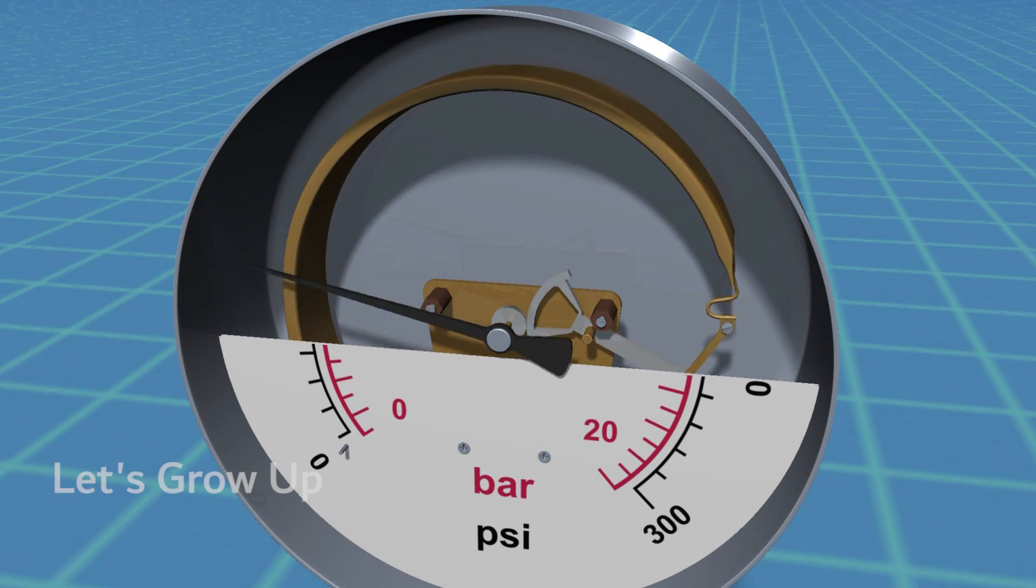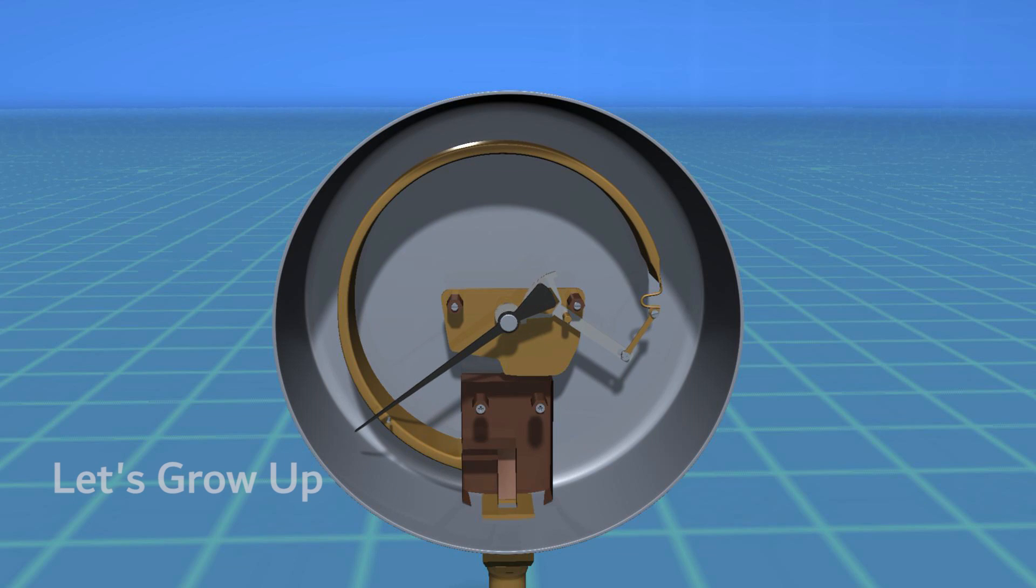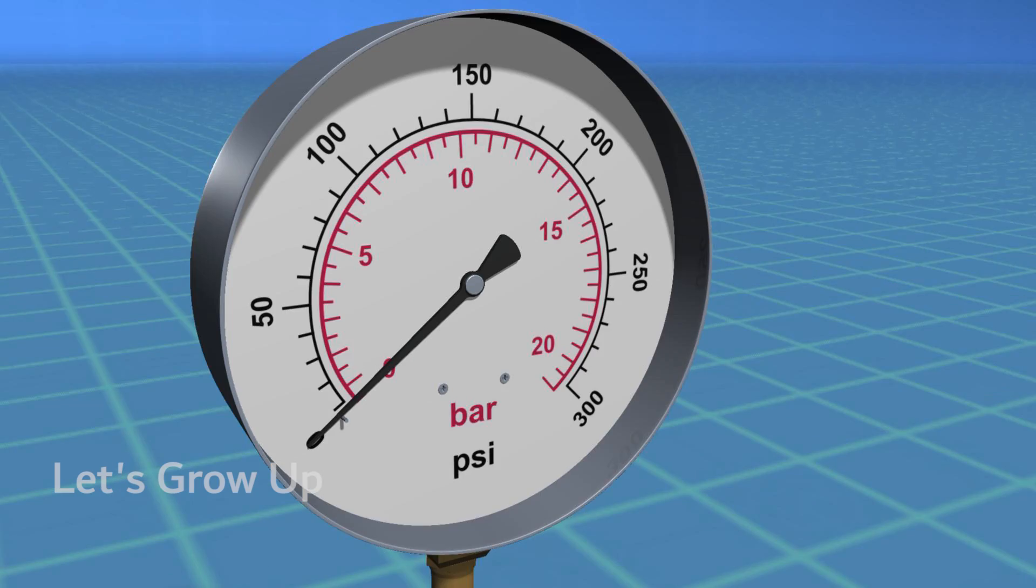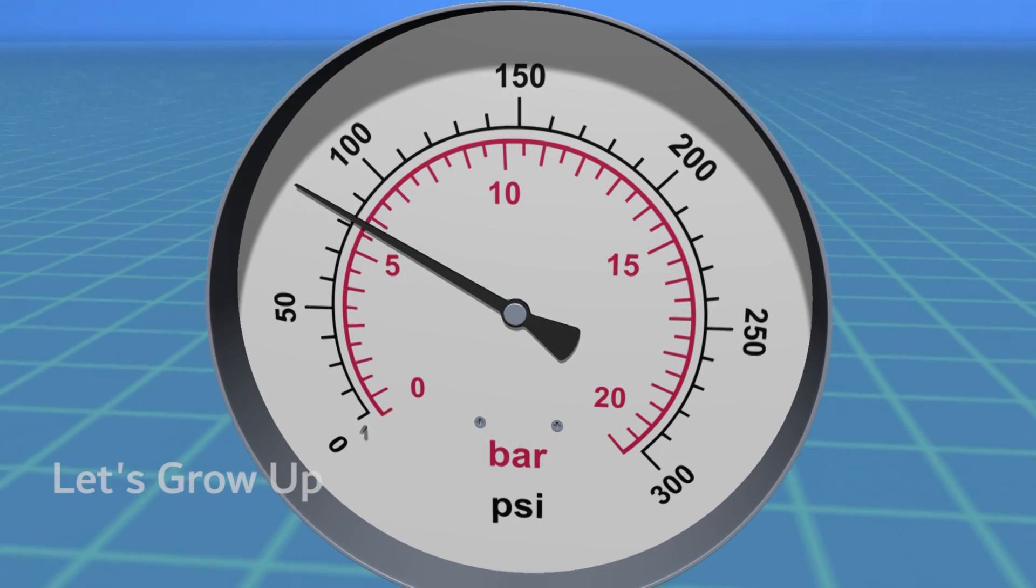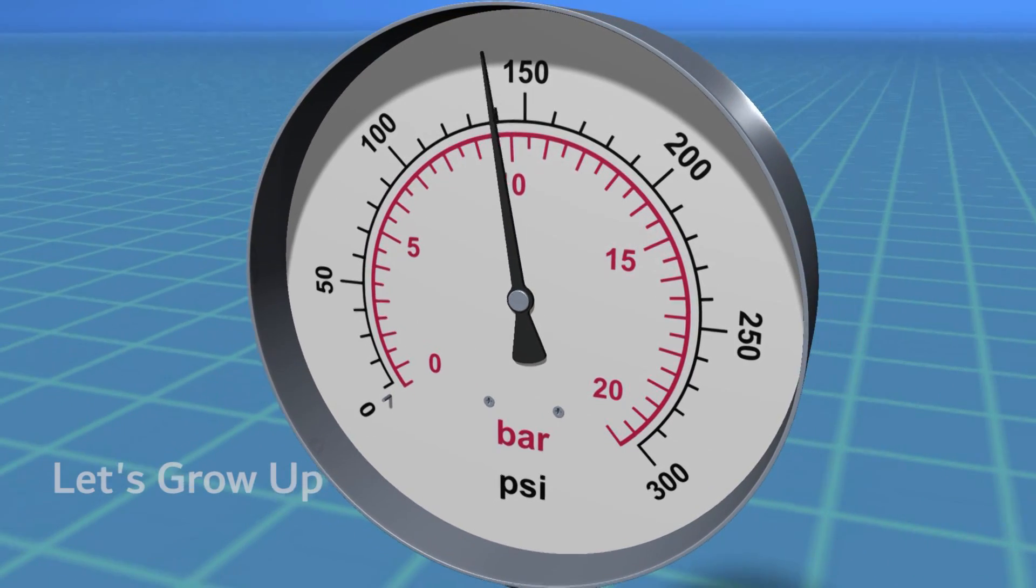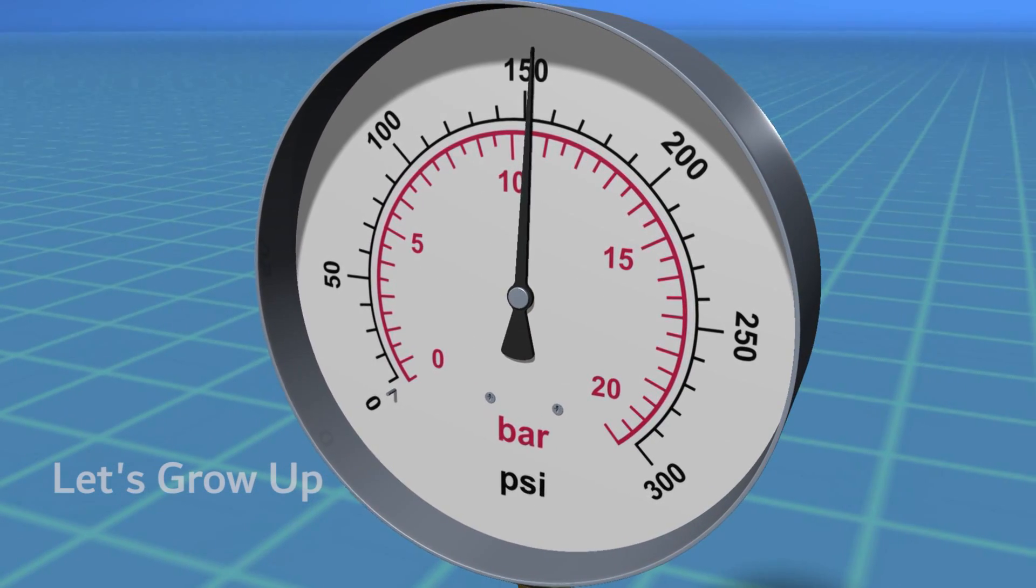So, when you see the pointer moving, it means there's pressure pushing on the Borden tube inside the gauge. The dial on the pressure gauge displays the measurement of the air or liquid pressure. Here, it shows two types, bar and PSI.